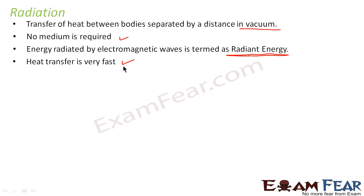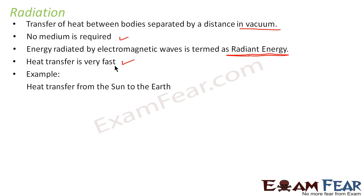Heat transfer in this mode is very fast. Amongst the three modes — conduction, convection, and radiation — this is the fastest mode of heat transfer. For example, the most common example is the heat transfer from the sun to the earth. How do we get heat from the sun during daytime? There is no medium which carries the heat to the earth. The transfer of heat takes place through electromagnetic waves in vacuum, and the transfer is very fast.